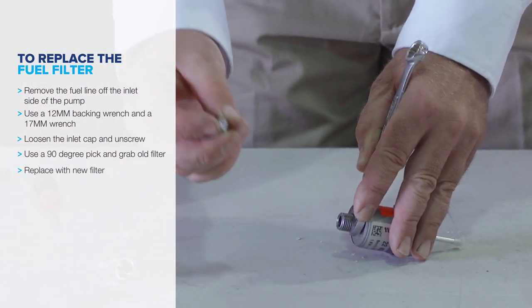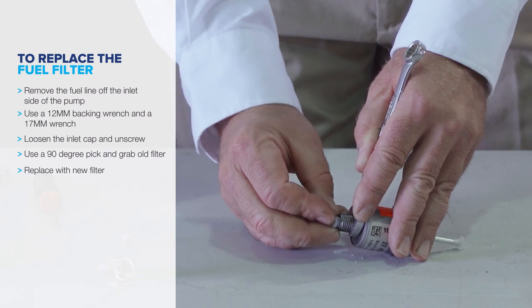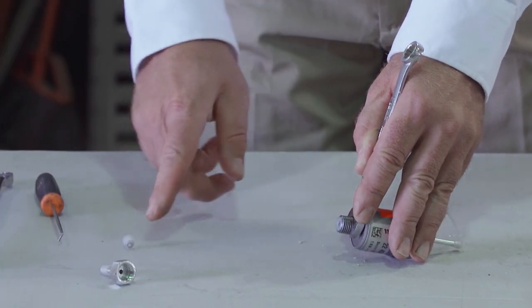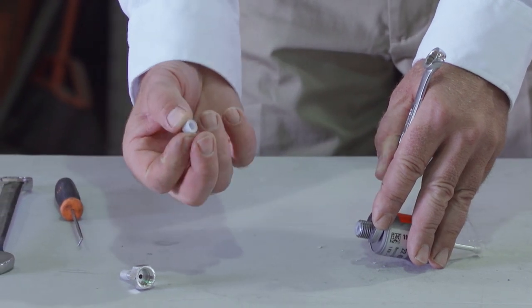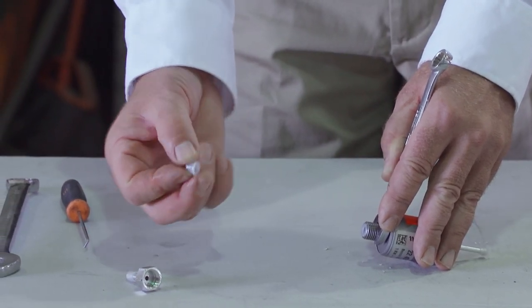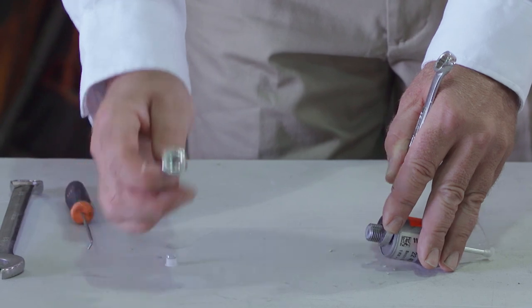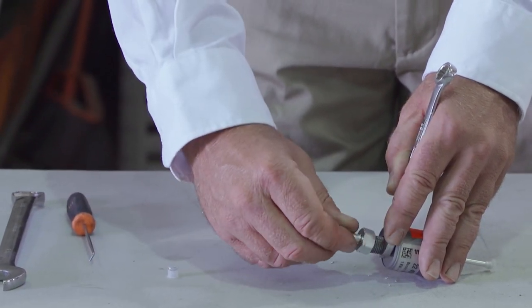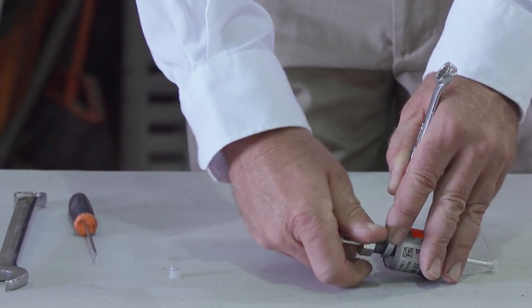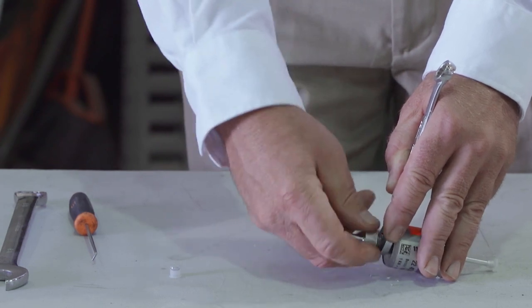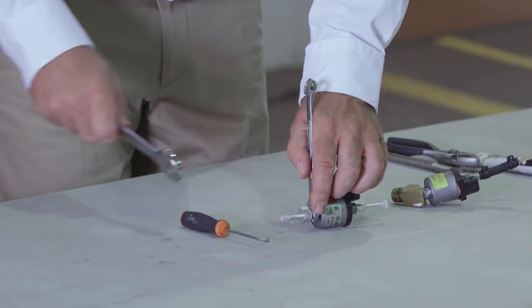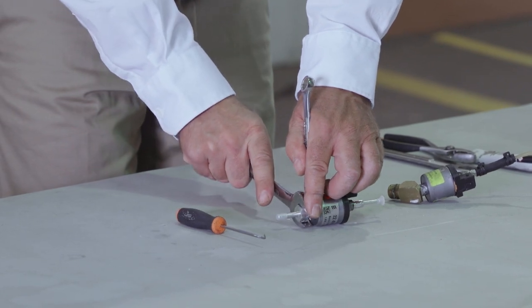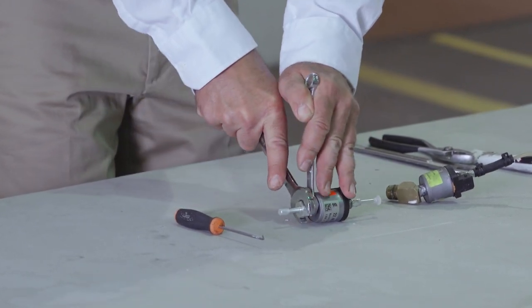Take your new fuel filter and place it in the inlet side of the cap. If the filter has been removed, it should be replaced because the nylon ring on the inlet side is a crush washer. You'll take your cap, screw it back on the inlet side. Take my 12 millimeter backing wrench and my 17 millimeter wrench to tighten the cap up.